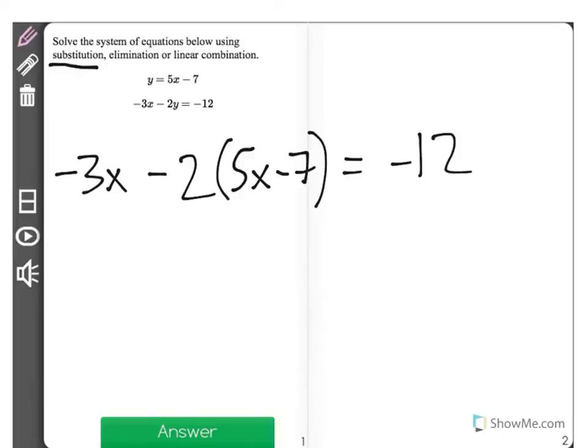Now I'll just simplify, starting by expanding. Negative 2 times 5x, well that would give me minus 10x. And minus 2 times negative 14 equals positive 14 is equal to negative 12.